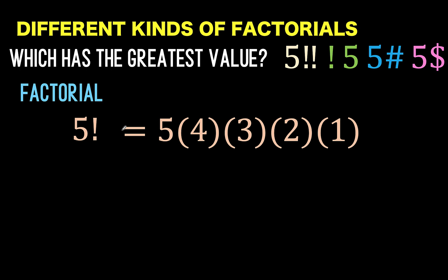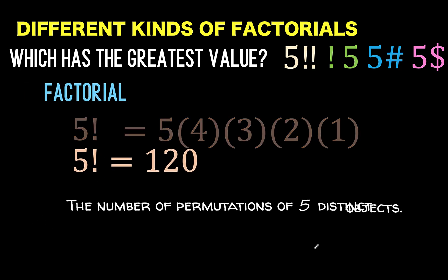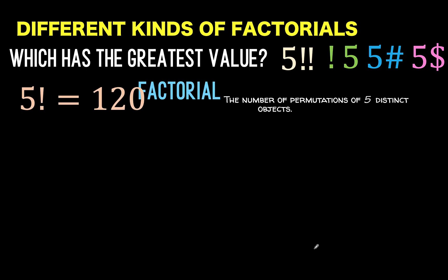Or you multiply the natural numbers from 1 up to n. And this is equal to 120. So 5 factorial is 120, and the interpretation of this number is that 120 is the number of permutations of 5 distinct objects. So let's remember this value.